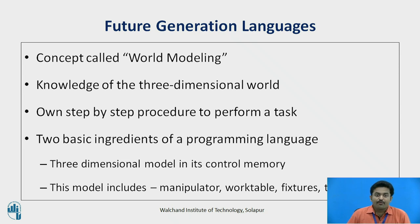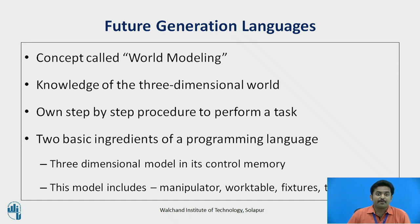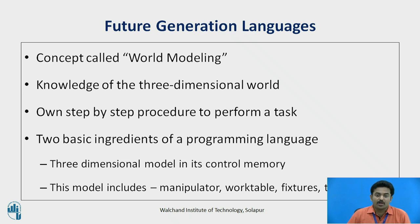Future generation languages will involve a concept called world modeling. In a programming scheme based on world modeling, the robot possesses knowledge of the three-dimensional world and is capable of developing its own step-by-step procedure to perform a task based on a stated objective. The first ingredient is that the robot system has in its control memory a three-dimensional model of its work environment, including the robot manipulator itself, the work table, fixtures, tools, and parts.